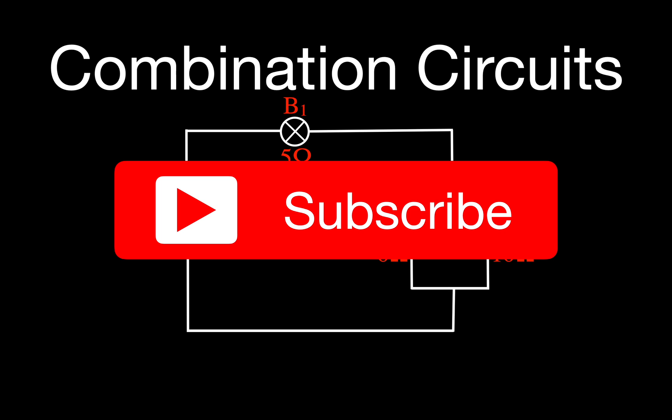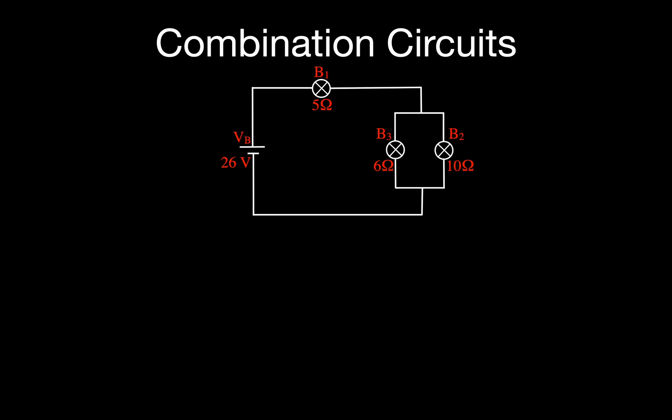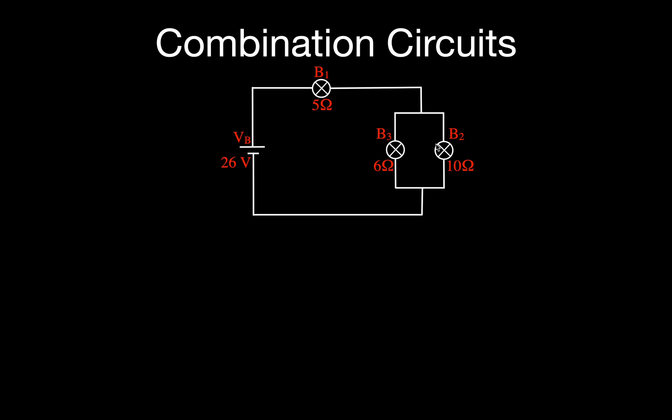Let's get started. This is the first circuit we're going to look at. We have two bulbs that are in parallel with each other, and then those two bulbs in parallel are in series with a third bulb. So we have B1, B2, and B3 — 5 ohms, 6 ohms, and 10 ohms.